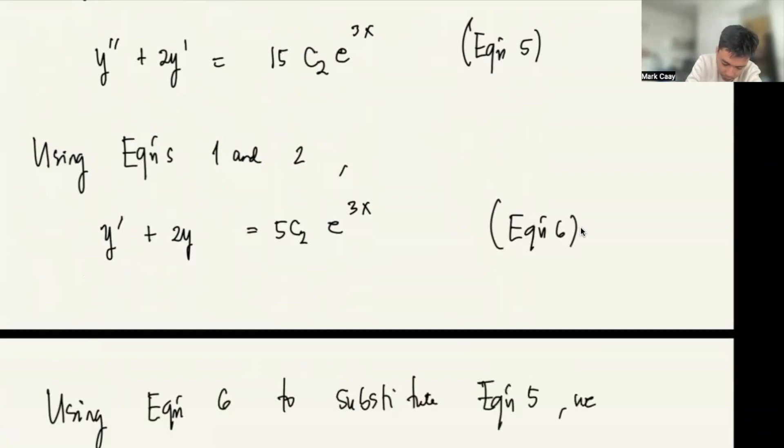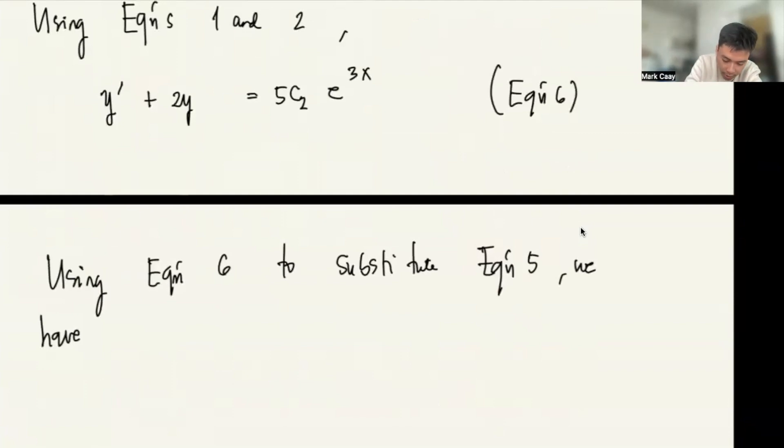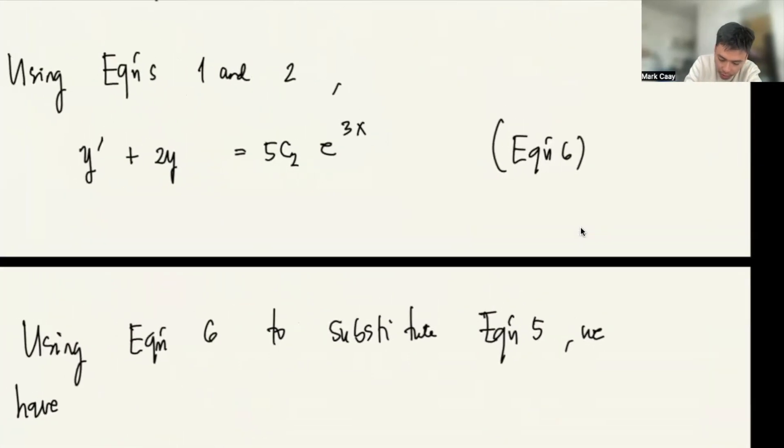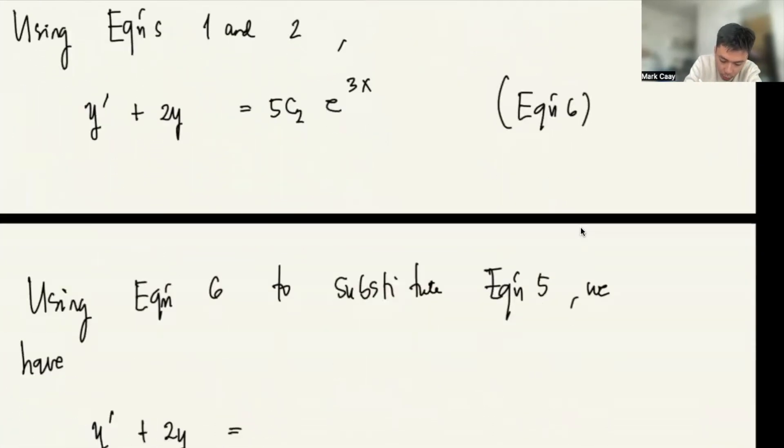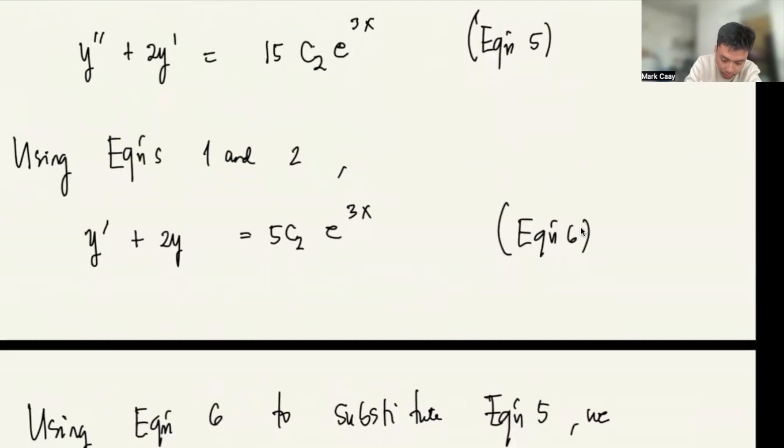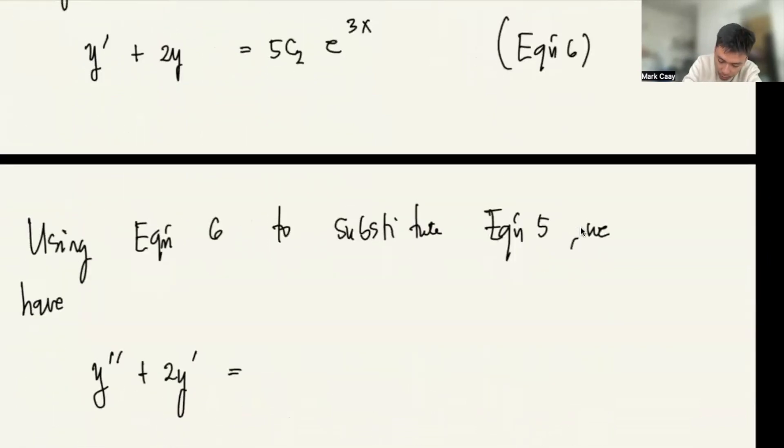we have - what is equation 6? y double prime plus 2y prime - sorry, equation 5 is y double prime plus 2y prime equals 15c2 e to the 3x.